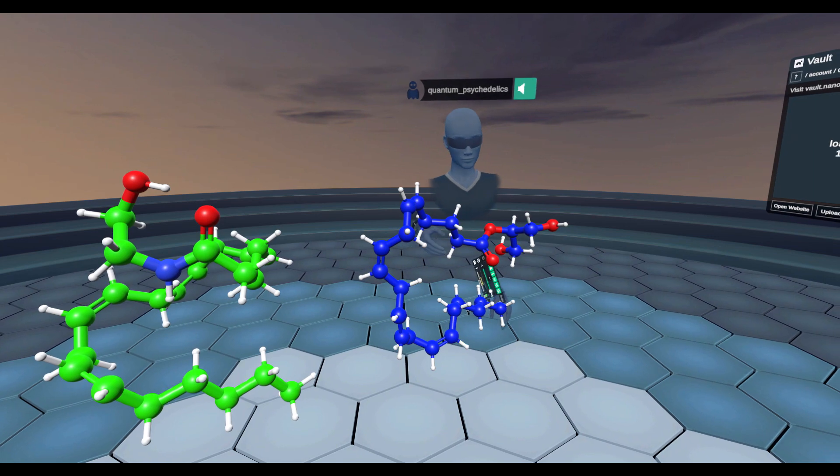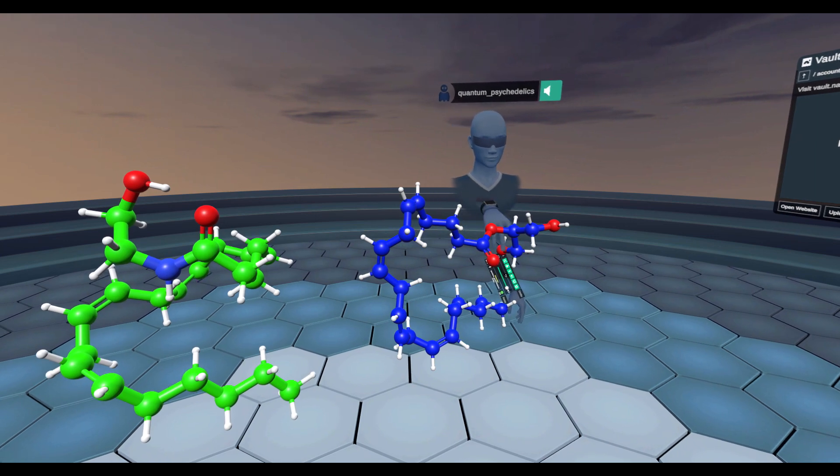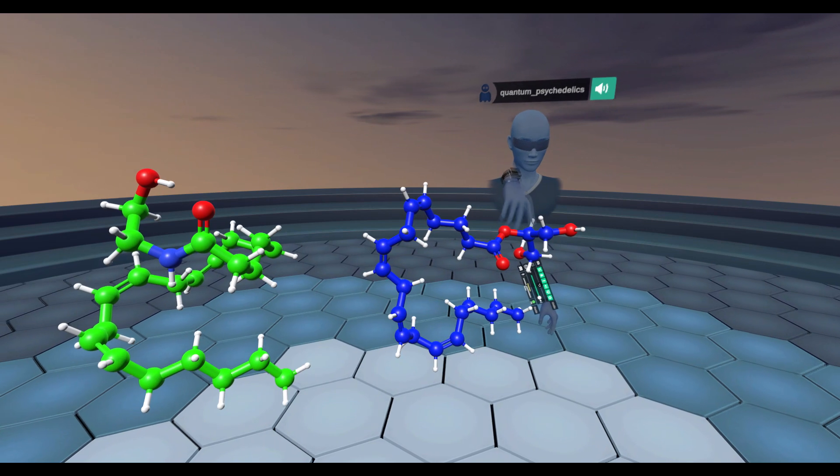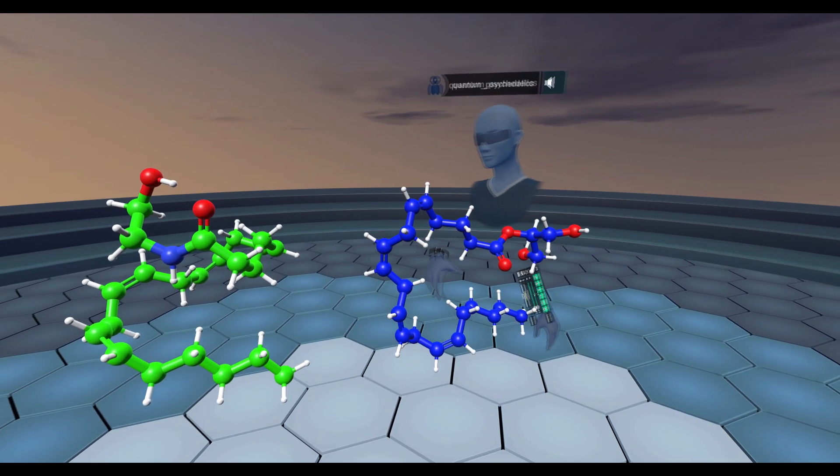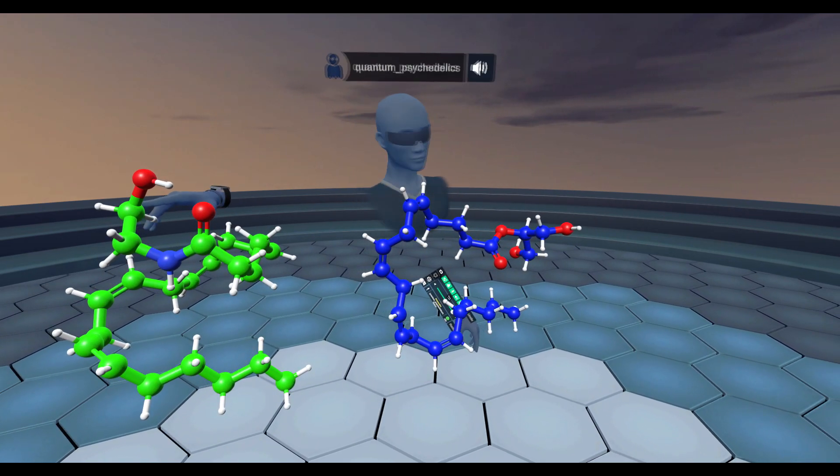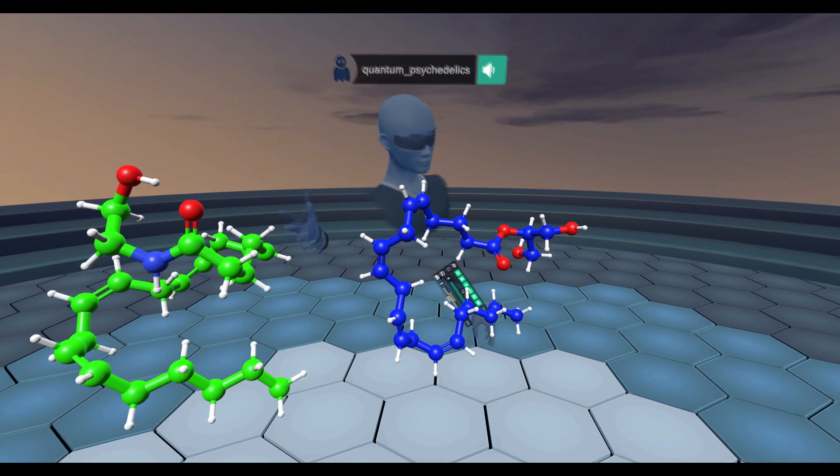The only other difference is that 2-AG has a dialcohol, one alcohol here and one here, whereas anandamide only has one of these alcohol groups.